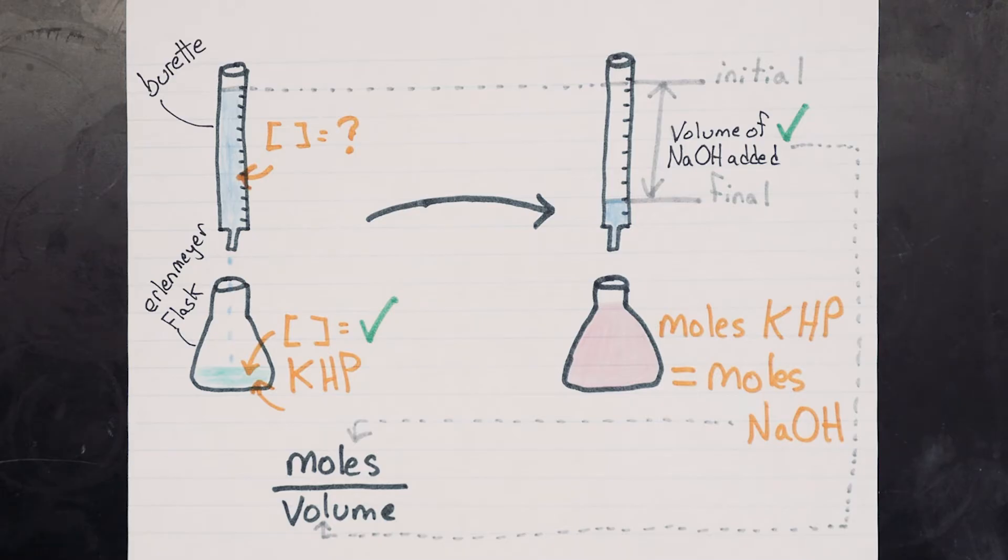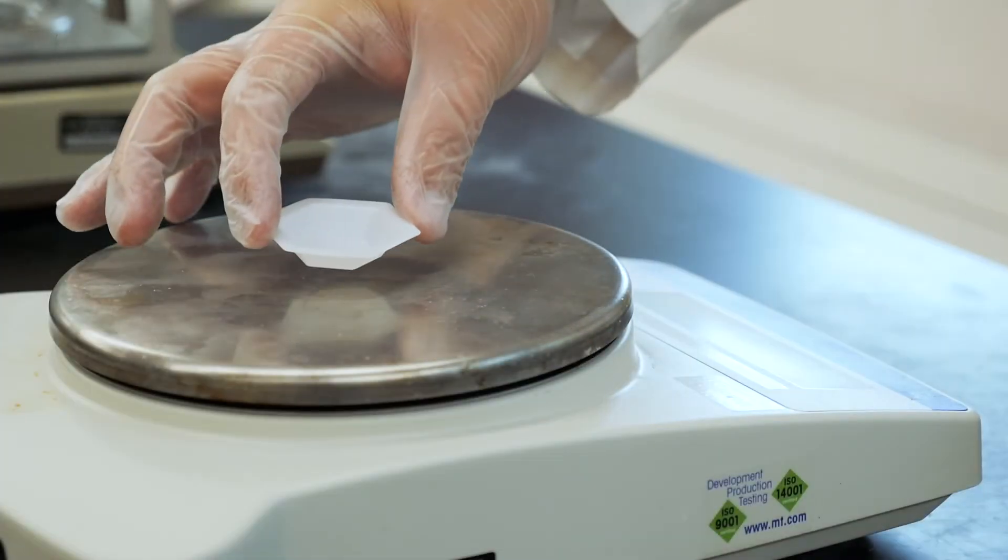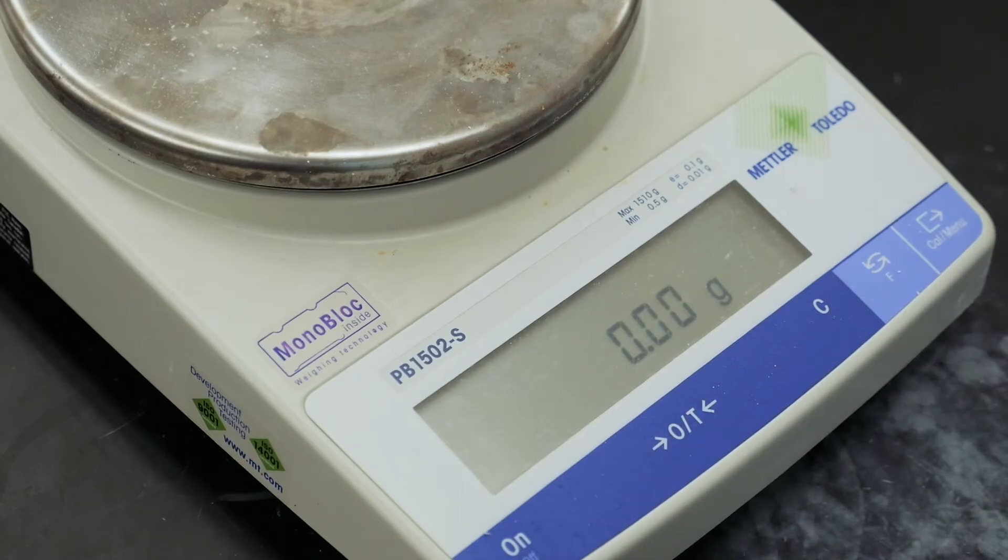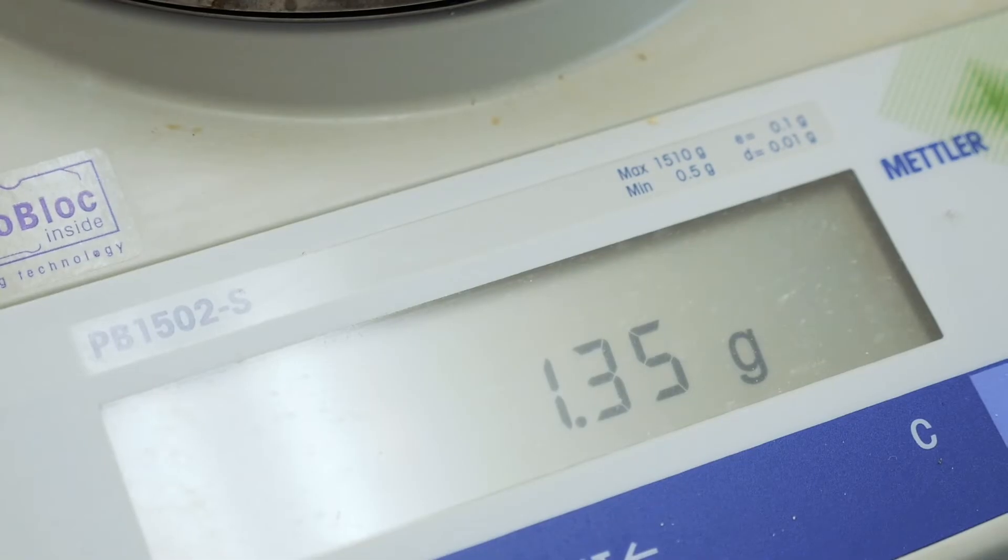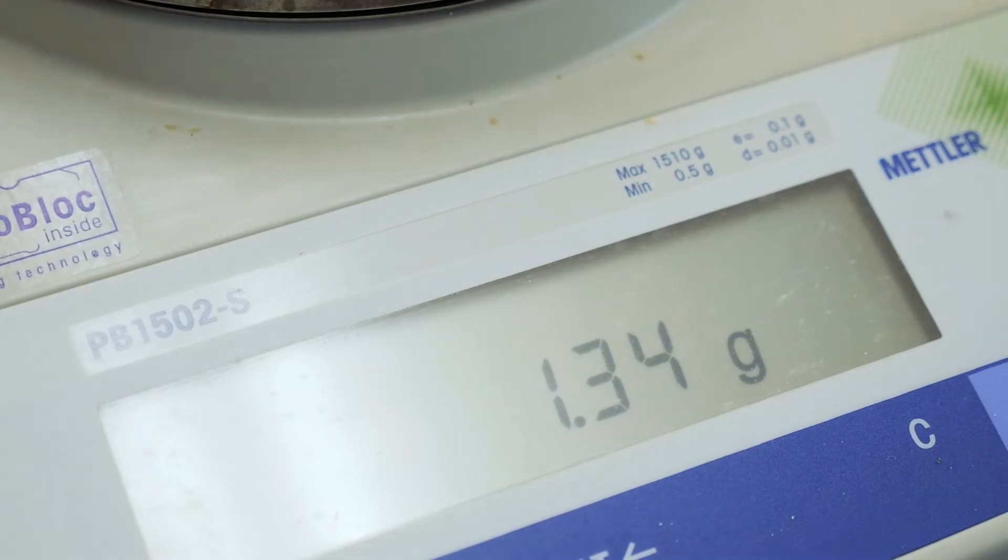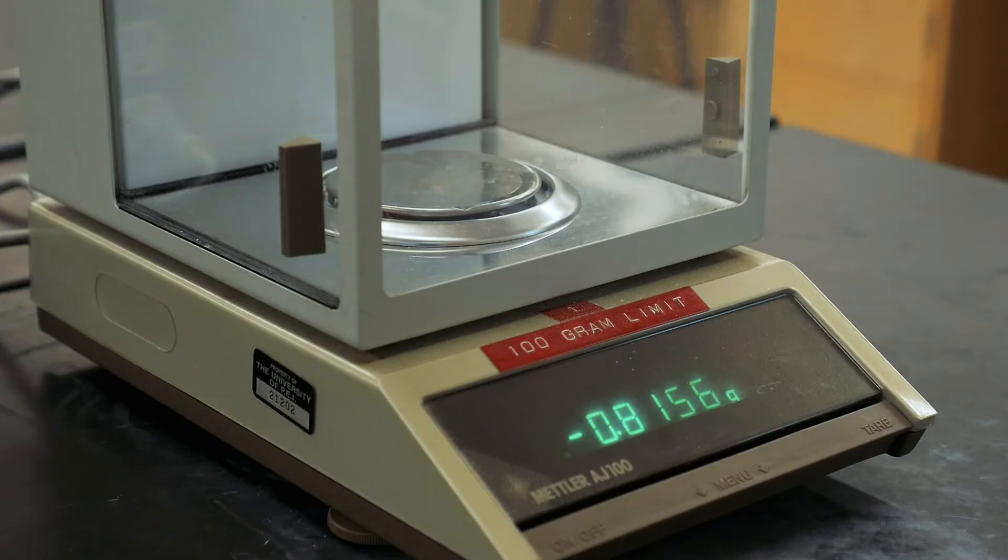Let's get to it. Place a clean plastic weighing dish on the pan of a top loading balance and tare it. The display will read zero grams. Add between 1.2 and 1.5 grams of dried KHP. To measure the mass of KHP more accurately, you'll use an analytical balance. Zero the analytical balance by pressing the tare button and place the weighing dish containing your KHP on the pan to determine the total mass.